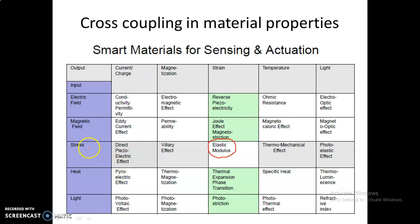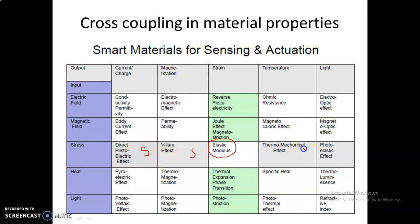If you want a system to sense stress in terms of electricity, then the intersection will provide the direct piezoelectric effect. Here, the system will act as a sensor of stress in terms of electricity. If you take the Villari effect — if you want to sense stress in terms of magnetic field — then the system will act under the Villari effect. This row will give us different sensors of stress.